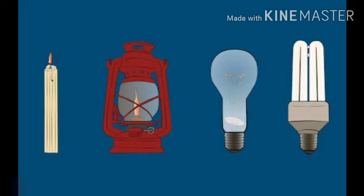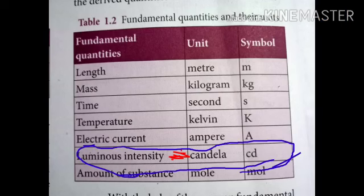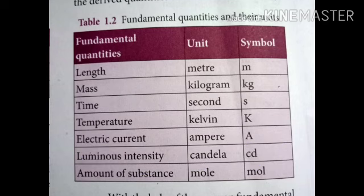What is luminous intensity? Luminous intensity means the source of light. If you light a candle or we have a bulb, the source of light is measured in the unit of candela. Next, we see the derived quantities and their units in the tabular column.